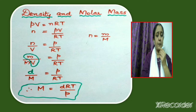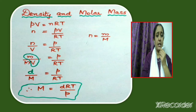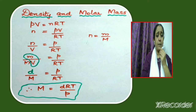We know that the number of moles n is equal to mass divided by molar mass. When we substitute for n, we get m/(M·V) = P/RT. But we know that mass divided by volume gives us density, so m/V = density d. The equation becomes d/M = P/RT, or finally, molar mass M = dRT/P.